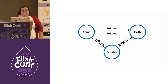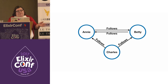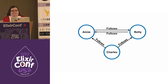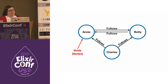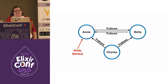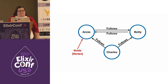Here's a super simple social graph modeling users following each other like they would on Twitter. You have a node — which you've probably heard called a vertex or a point in math class. Here our node is called Annie, and we have other nodes, Betty and Charles.